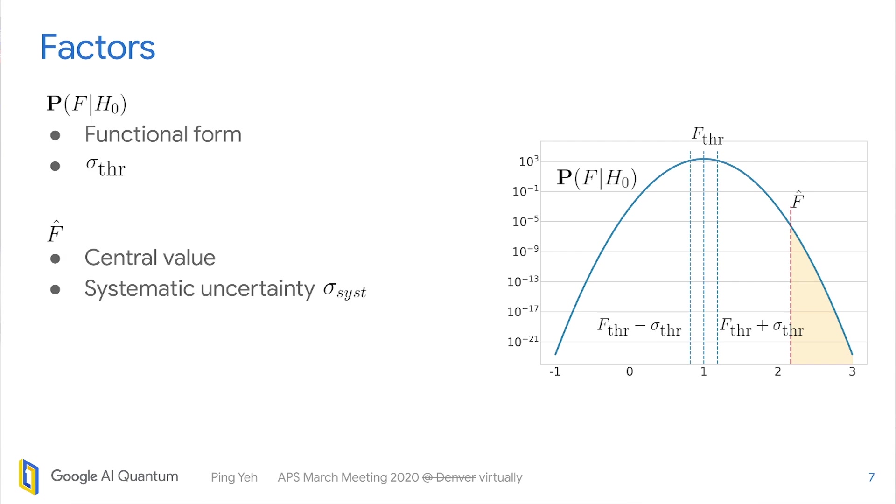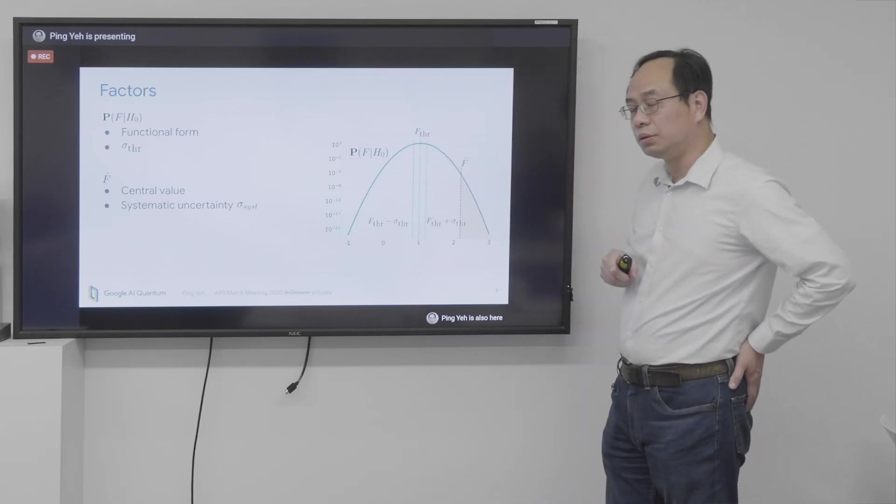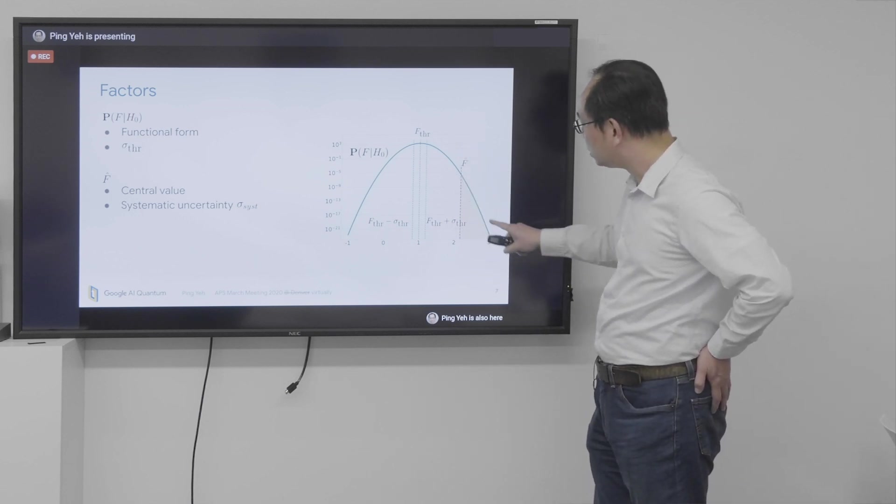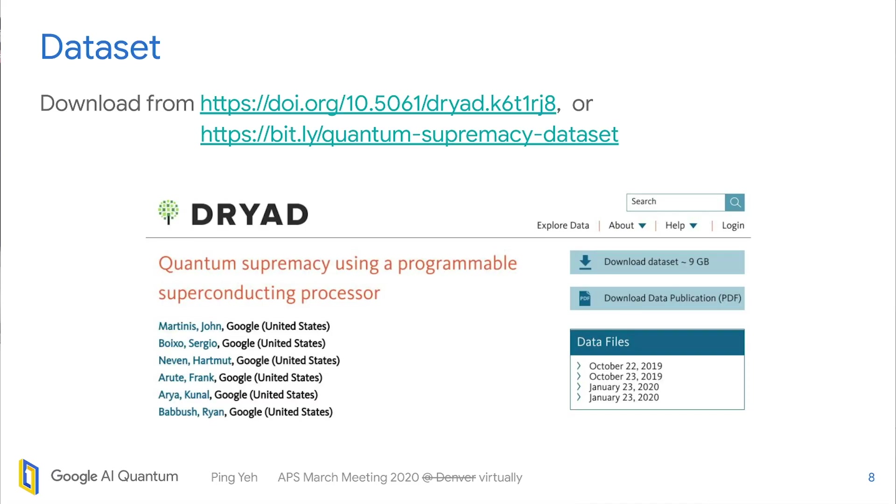So there are a few factors in getting this p-value. First is the distribution function of the Hnull. The second is the estimation of the F hat. And the third is the distribution around F hat. So let's try to get those. First of all, the data set I used for analysis can be downloaded here, bit.ly slash quantum supremacy data set.